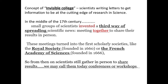In the middle of the 17th century, a small group of scientists invented a third way of spreading scientific news. Instead of writing letters, they said, why not come together and meet each other to share the data obtained, so that we can discuss and come to a conclusion? That is how these meetings turned into the first scholarly societies, like the Royal Society founded in 1660 or the French Academy of Science founded in 1666.